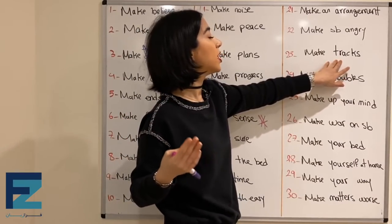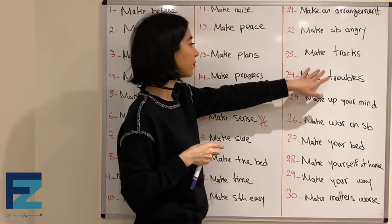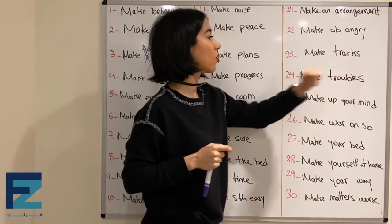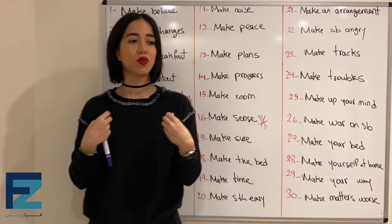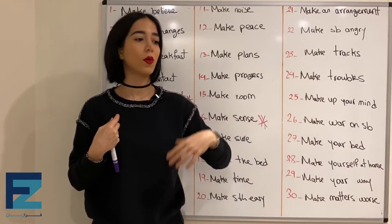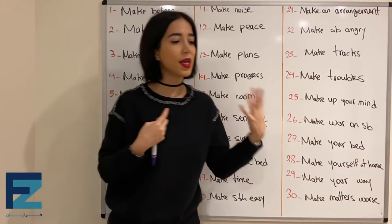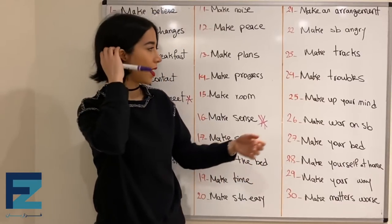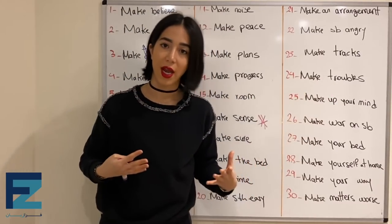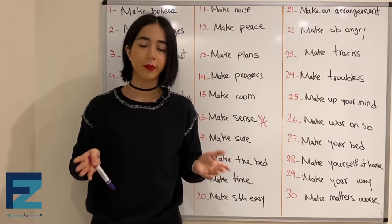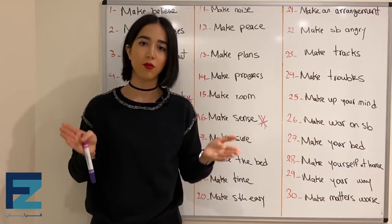Number twenty-three: make tracks — means to leave a place in a rush, یه جایی رو با عجله ترک کردن. Number twenty-four: make troubles — means to trouble someone, برای یکی مشکل به وجود آوردن. You're all the time making troubles.